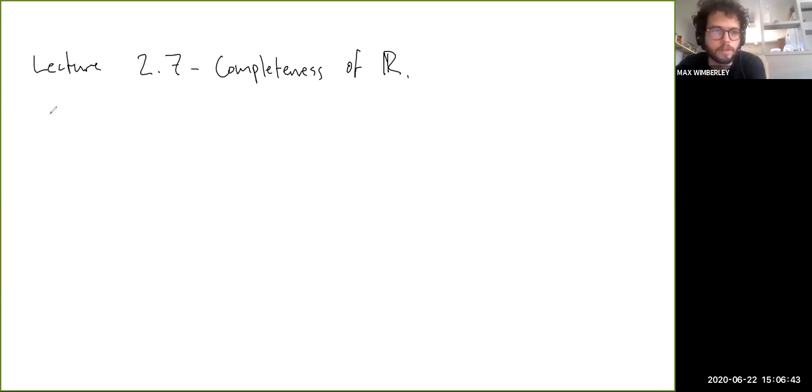Okay, so we just defined maxima, minima, boundedness, and suprema and infima. Now we can use those to phrase the completeness property of ℝ, which this book calls the completeness axiom.